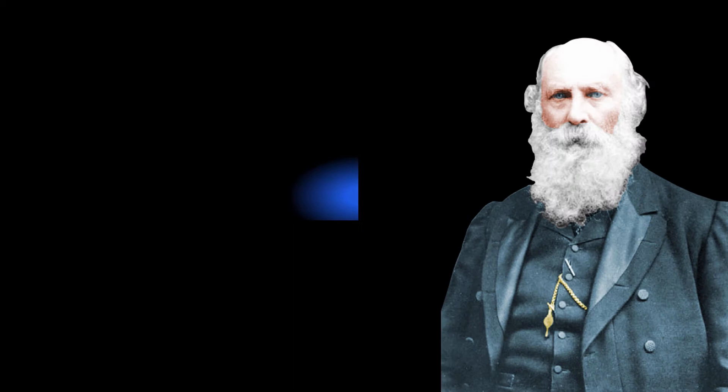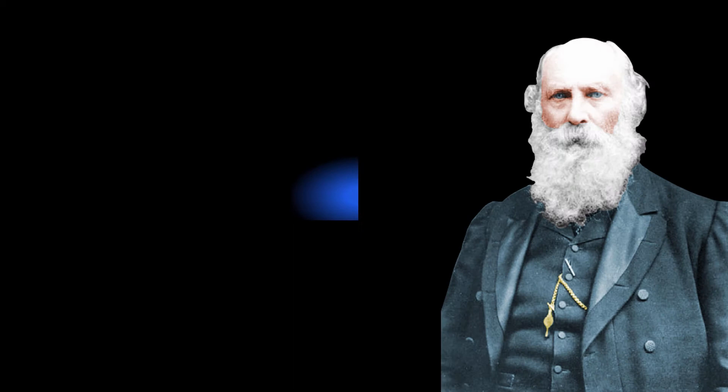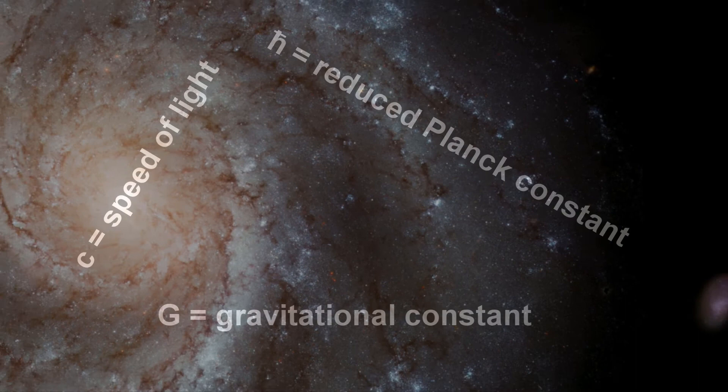It's worth reminding ourselves of how we ended up with this thing we call the Planck mass. We derived the Planck mass from the universal natural constants, C, H-bar and G. As a result, we hope to have found a mass that is in some way fundamental to the universe.